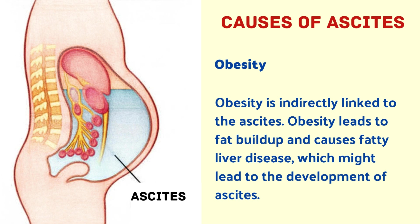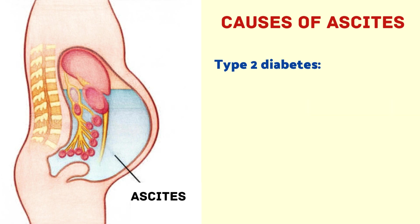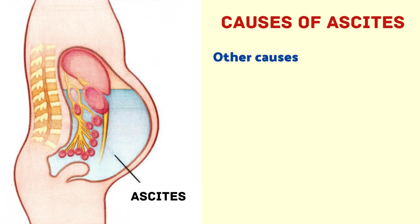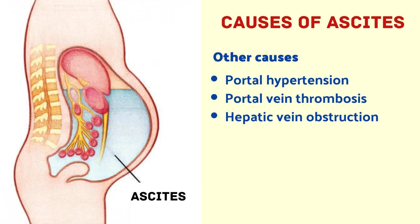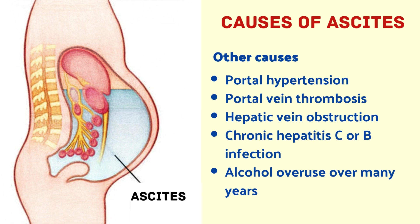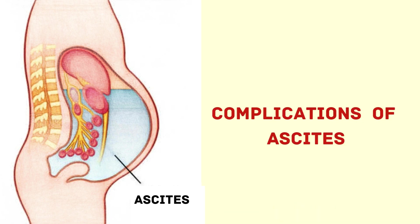The next cause is obesity. Obesity is indirectly linked to ascites — it leads to fat buildup and causes fatty liver disease, which might lead to the development of ascites. The next cause is type 2 diabetes, which could damage the blood vessels of the liver and result in portal hypertension, causing ascites. Other causes include portal hypertension, portal vein thrombosis, hepatic vein obstruction, chronic hepatitis C or B infection, alcohol overuse over many years, and fatty liver disease.